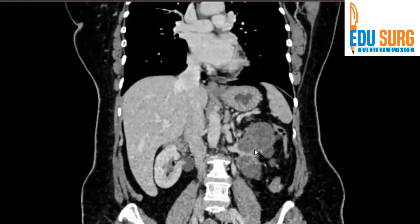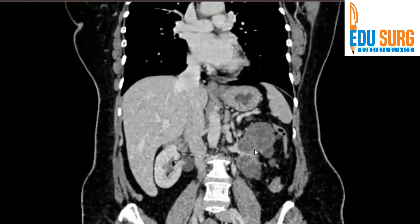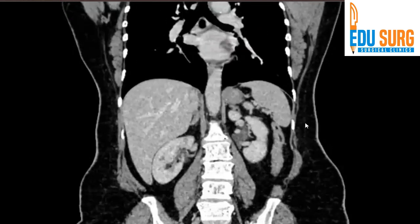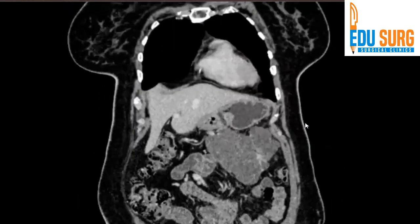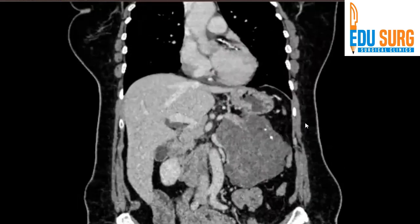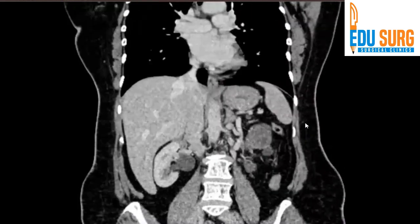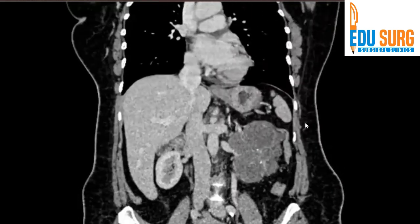This patient was operated with a spleen-preserving distal pancreatectomy, and the final histopathology was microcystic adenoma with no malignant potential. That is how you review these scans with your radiologist on the console and plan your surgery — so that you don't miss out on points. You understand the radiologist's perspective and the radiologist understands the surgeon's perspective, and a proper treatment plan for the patient is formed.